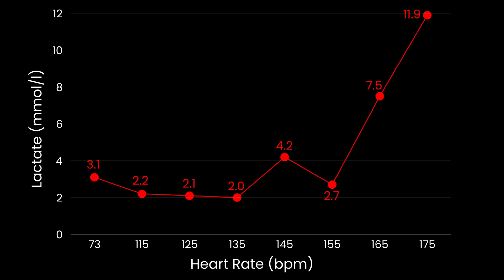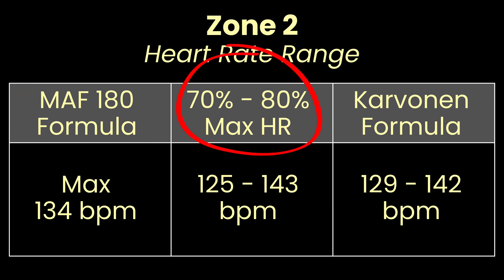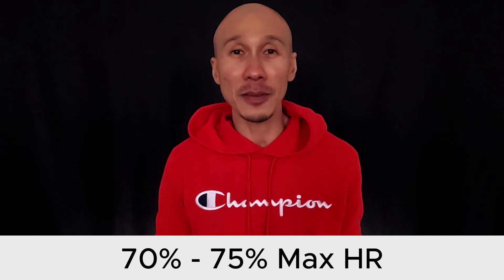Now let's compare those formulas against my blood lactate levels during the test. From the lactate test, my blood lactate concentration of 2 millimoles per liter corresponds to about 135 beats per minute — that is probably where my zone 2 heart rate ceiling sits. Comparing that to the 134 beats per minute derived from the MAF 180 formula, I have to say it's pretty spot on. When calculating using 70 to 80% of maximum heart rate, my zone 2 range is 125 to 143 beats per minute. At 135 beats per minute, my lactate was already at 2.0 millimoles per liter, meaning I should not go above this if I want to train in zone 2 — so a range up to 80% of maximum heart rate is too high for me. A better range for me would be 70 to 75% of maximum heart rate.